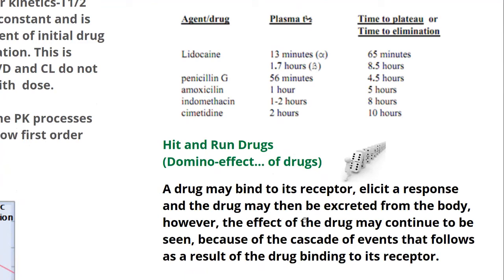Returning to the concept of efficacy half-life, the idea of hit-and-run drugs is quite similar. If you recall the domino effect — letting the first domino fall causes a series of dominoes to fall consequently — this kind of effect can be seen with drugs as well. A drug can act and trigger a cascade of events. So even long after the drug is gone from the system, the effect will be seen in the body. A drug may bind to its receptor, elicit a response, and then be excreted, but the effect may continue because of the cascade of events that follows drug-receptor binding.